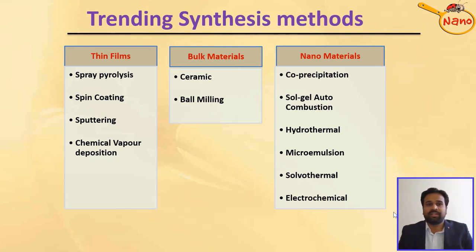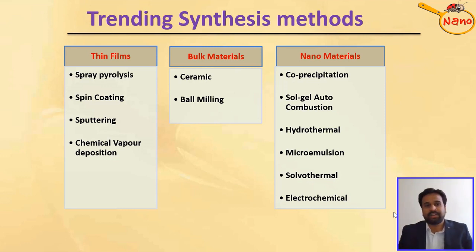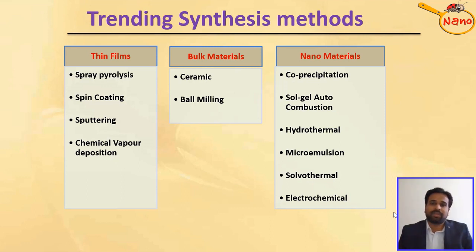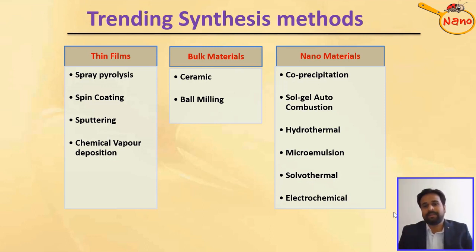Nowadays, trending synthesis methods for thin films include spray pyrolysis, spin coating, sputtering, and chemical vapor deposition. For bulk materials, conventional ceramic and ball milling processes are used. For nanomaterials specifically, chemical co-precipitation, sol-gel, combustion, hydrothermal, microemulsion, solvothermal, and electrochemical methods are used.